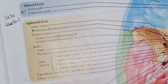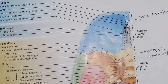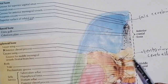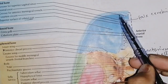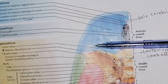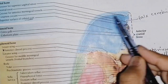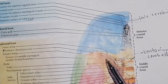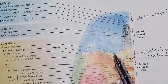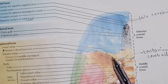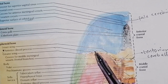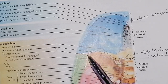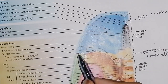Now we will see the boundaries and features, which are very easy. Let's discuss the anterior cranial fossa. The anterior cranial fossa is bounded anteriorly by the frontal bone. Posteriorly, it is bounded by the lesser wing of the sphenoid — the yellow bone. So posteriorly it is bounded by the lesser wing of sphenoid.